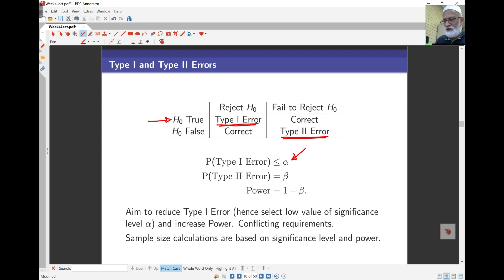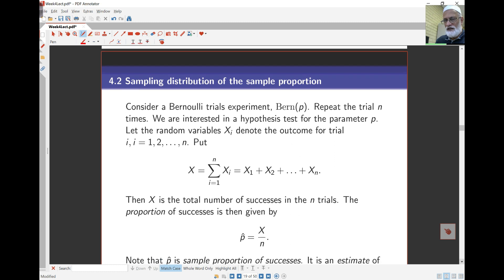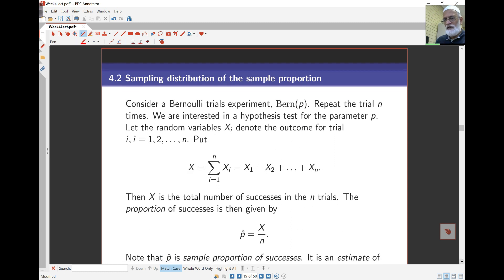This is what Type I and Type II errors and power are all about. You'll probably find more material on this online. Let's take a look at the next part—the sampling distribution of the sample proportion. We'll see this next year. Thank you.